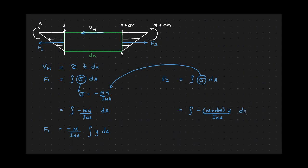Let's put the constants outside of the integral sign, therefore we have f2 is equal to negative m plus dm over i of the neutral axis times integral y dA.